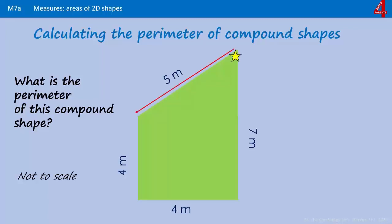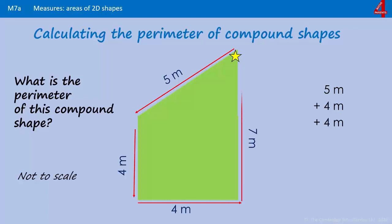If we say that the length of this diagonal line here is five meters, then we travel down here — that's four meters — and then another four meters across, and then seven meters to take us back up to the top. Adding those together, the perimeter of that shape is 20 meters.